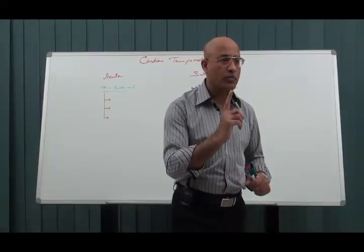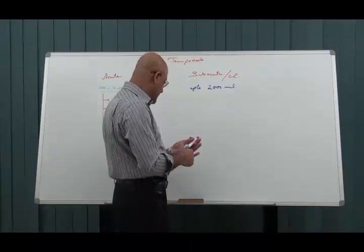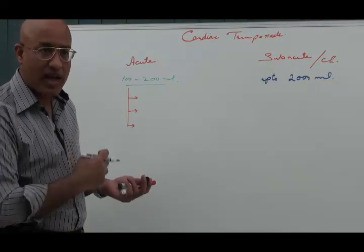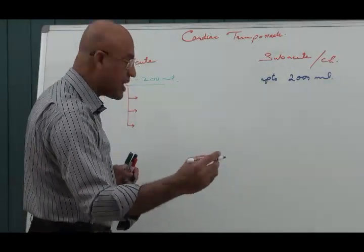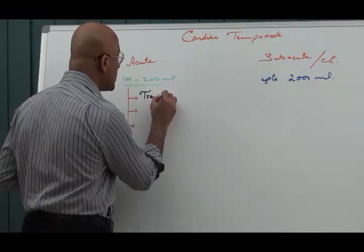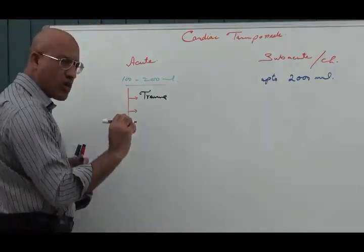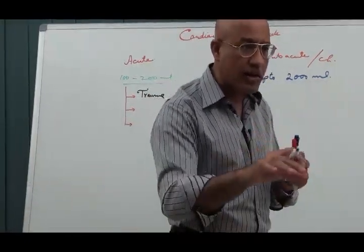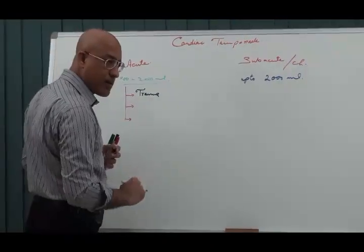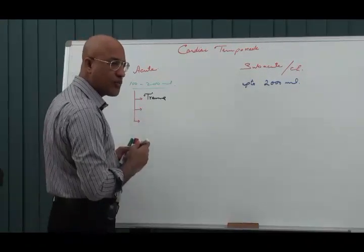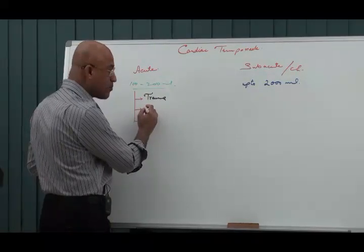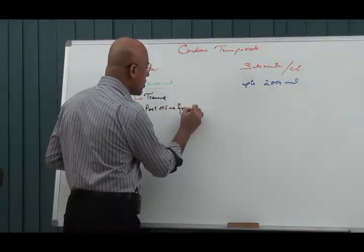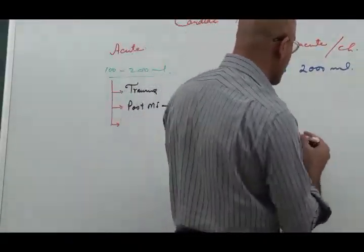Causes of rapid tamponade include free wall rupture of the ventricles, chest trauma such as a stab wound leading to rupture of the coronary artery, root of the aorta, or free wall of the ventricles or atrium. Blood accumulates into the pericardial sac very rapidly, leading to tamponade. Another important cause is post-MI free wall rupture — post-myocardial infarction free wall rupture.